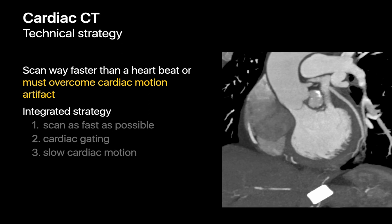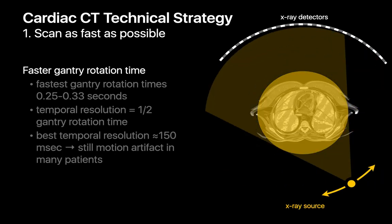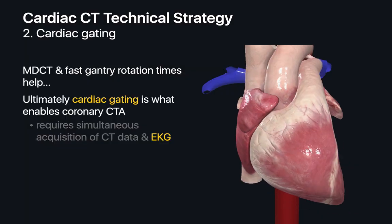Overcoming cardiac motion artifact is the more practical and realistic path, and it takes a three-part strategy: one, scan as fast as we can; two, employ a technique called cardiac gating; and three, slow the patient's cardiac motion as much as we safely can. There are two things that permit us to physically do a CT scan faster: multi-detector CT technology, and cutting down the gantry rotation time of our CT machine as much as possible. Together, both technologies are of help, but they're not enough, so we also must rely on cardiac gating.